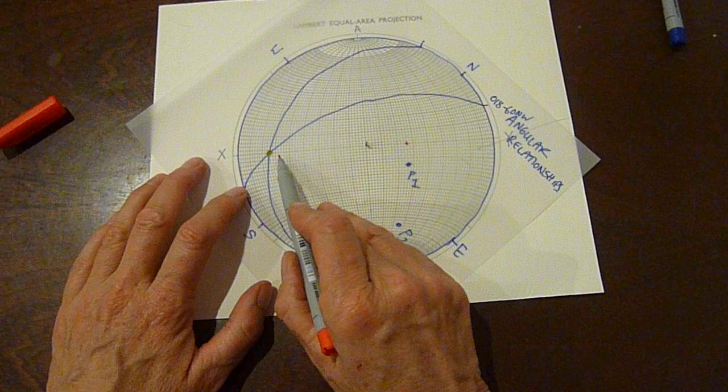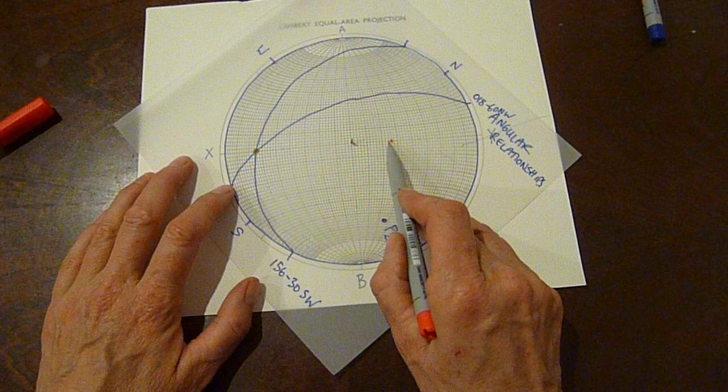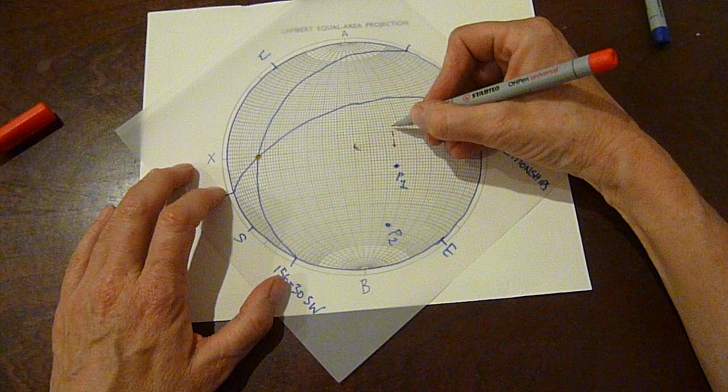And I can actually check it. There's three degrees there—four degrees there, sorry. 10, 20, 30, 40, 50, 60, 70, 80, 82, 84, 86, plus another four makes 90. And this is the plane we want.